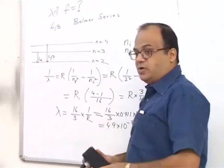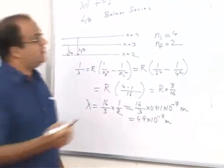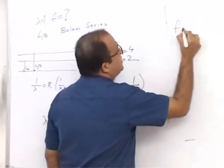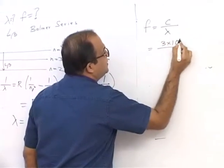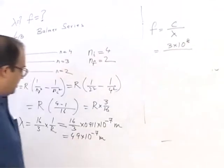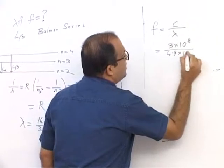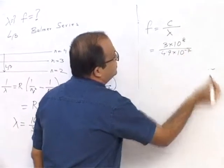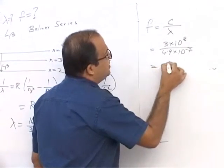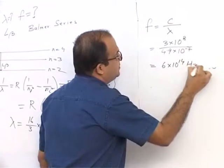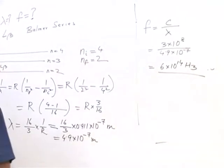It is easy to calculate if you know 1 by R. Now frequency is also easy to calculate. Frequency equals C upon lambda, that is 3 into 10 to the power 8 divided by 4.9 into 10 to the power minus 7. This becomes 6 into 10 to the power 14. That is the frequency of the L beta line.